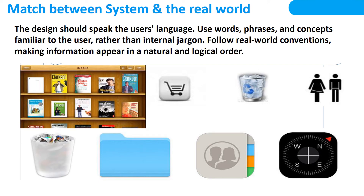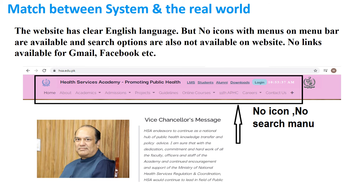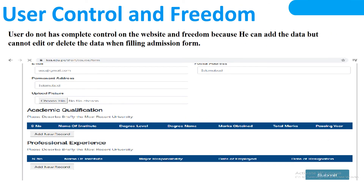Match between system and the real world: the design should speak the user's language, use words, phrases and concepts similar to the user rather than internal jargon, and follow real-world conventions making information appear in a natural and logical order. Regarding user control and freedom: as you see in this picture, the user does not have complete control on the website because they can add data but cannot edit or delete data when filling the admission form mistakenly — there is only one option, which is submit.